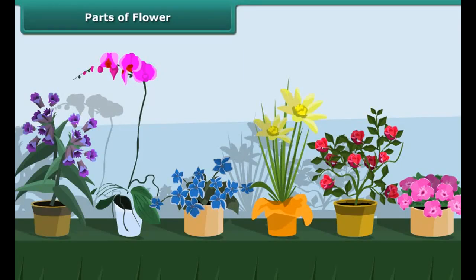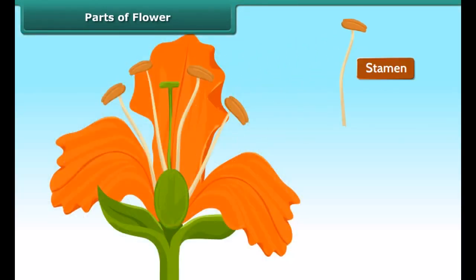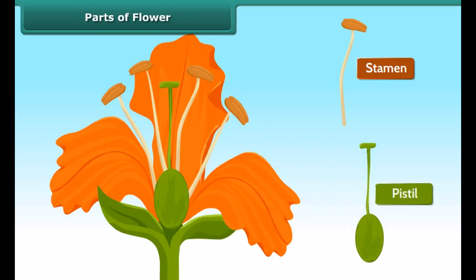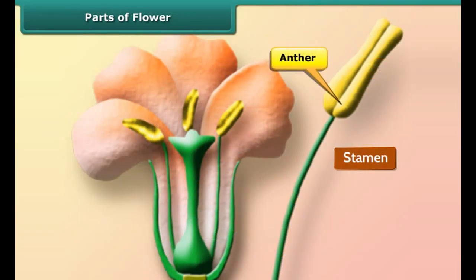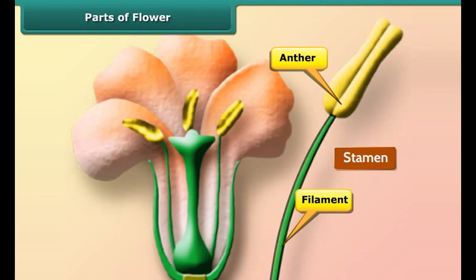Parts of a flower. Flowers are the beautiful parts of a plant. They are important in making seeds; therefore, they are the reproductive parts of a plant. Stamen is the male part of a flower, and pistil is the female part of the flower. The stamen has two parts: anther and filament. The anther is generally yellow in color and carries the pollen. It is held up by a thread-like part called a filament.